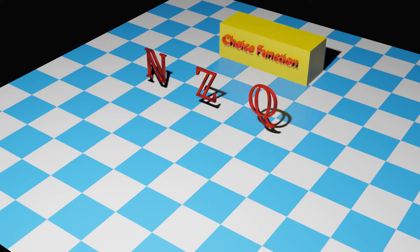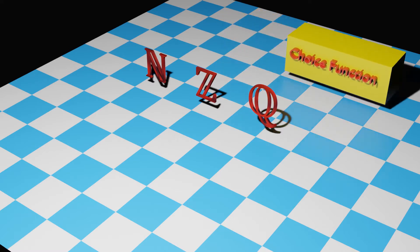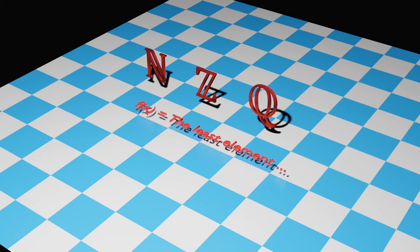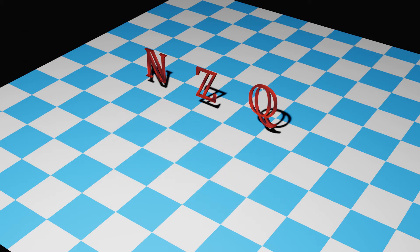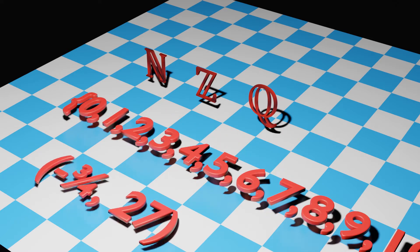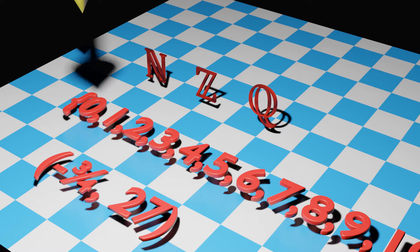Many times, we don't need such an axiom. We can define a function or a rule that chooses or selects one element of each set. Such a rule could be: choose the least number of each set, or the largest, or any other rule that finds a pattern and makes a choice based on that pattern.